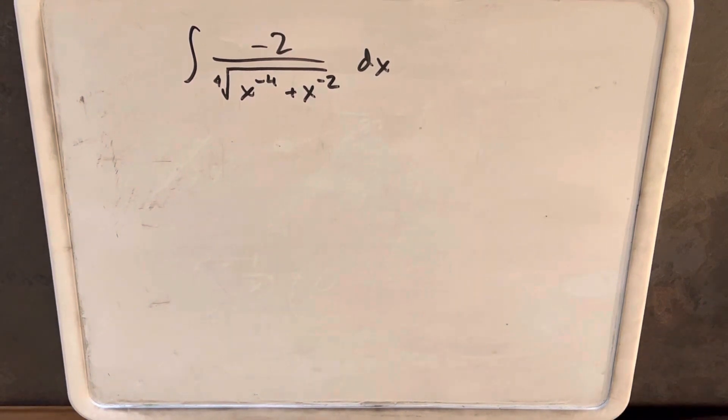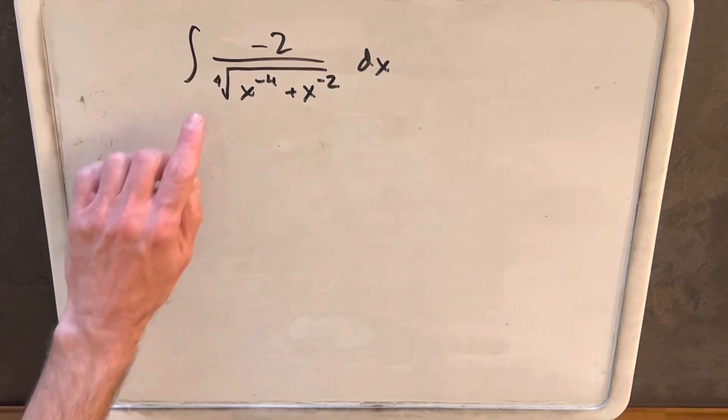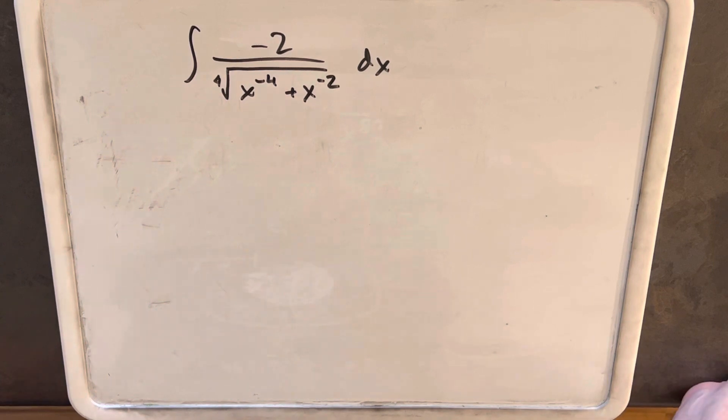Hey, we have an integral on the board: minus 2 over the fourth root of x to the minus fourth plus x to the minus 2 dx.